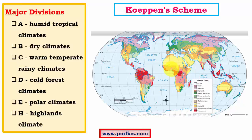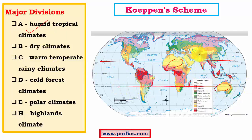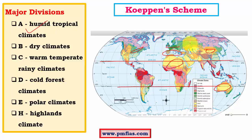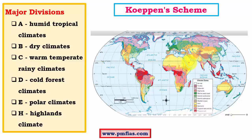All humid tropical climates exist within the tropics — between the Tropic of Cancer and Tropic of Capricorn. Dry climates include the Sahara, Great Sandy Desert, Taklamakan, and Gobi Desert. Warm temperate rainy climates include Mediterranean, Laurentian, and British type climates. Cold forest climates cover taiga forests and tundra regions. Polar climates represent extreme conditions at the poles, and highland climates cover the Andes, Himalayas, and major plateaus.